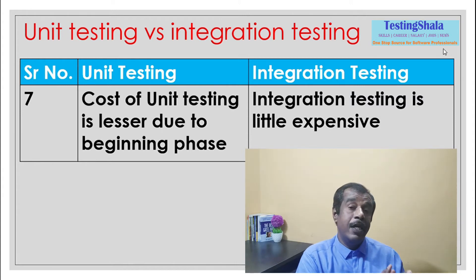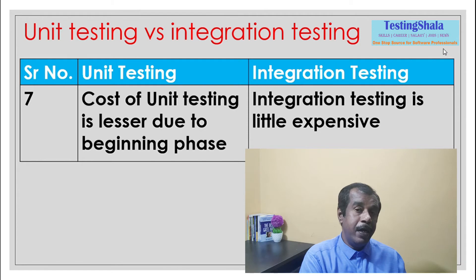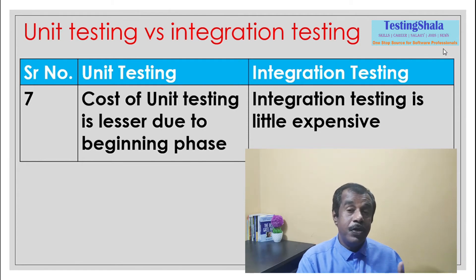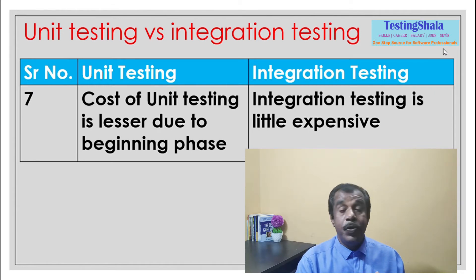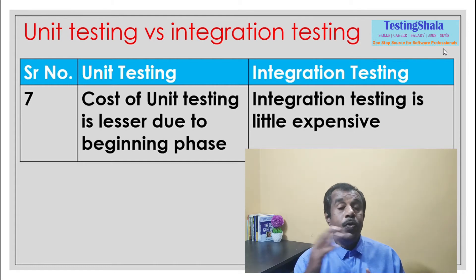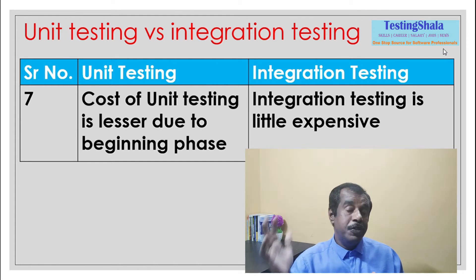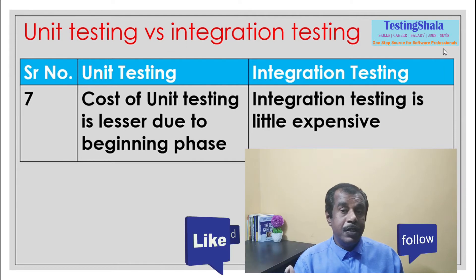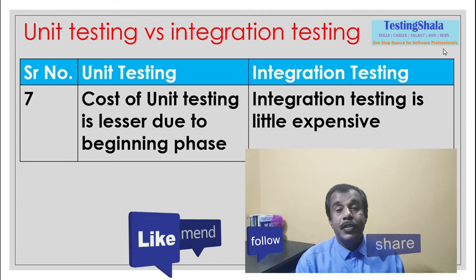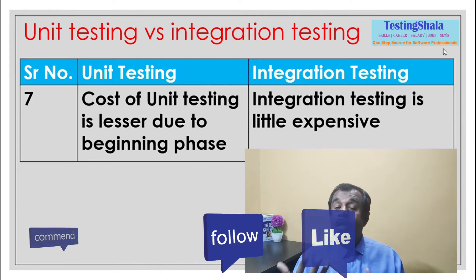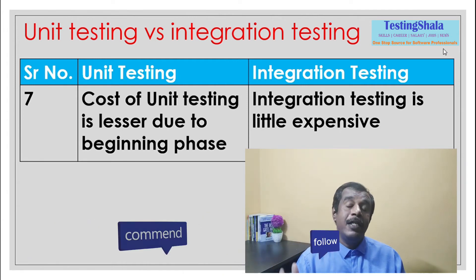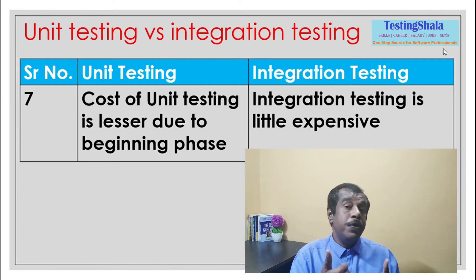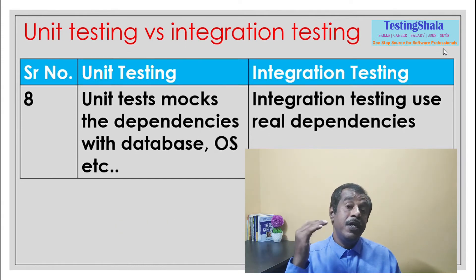The seventh important difference is the cost. Unit testing is cheaper because it happens at the beginning, and any issues found at that phase are easy to fix at a lower cost. As we move on to later phases, if issues pop up during integration testing, fixes require a lot more money. Hence integration testing is more expensive compared to unit testing.